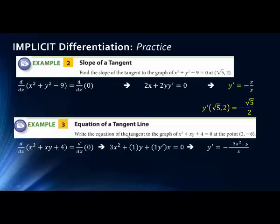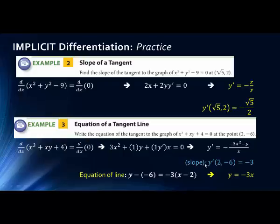They specifically want us to write the equation of the tangent line, so we need a linear equation y equals mx plus b. First we find the slope at the point (2, -6) by plugging those values in, and we get a slope of negative 3. Using point-slope form — y minus y1 equals m times x minus x1 — we write y minus negative 6 equals negative 3 times x minus 2. Simplifying, we get y equals negative 3x.